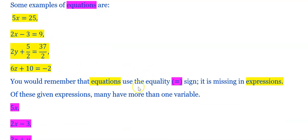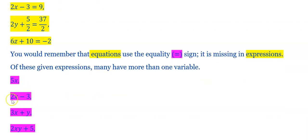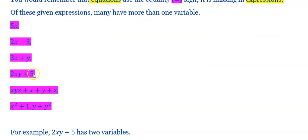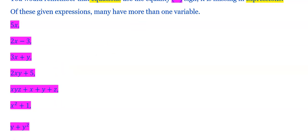In equations we have the equality sign. Of these given expressions, many have more than one variable. X, y, and z are each called a variable. 5x has one variable; 2x minus 3 has one variable; 3x plus y has two variables — x and y — and 3 is the coefficient of x. 2xy plus 5 has two variables. xyz plus x plus y plus z has variables x, y, z. These are expressions having more than one variable.